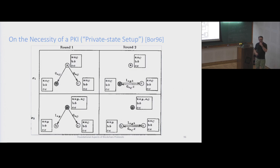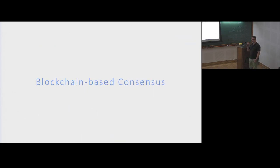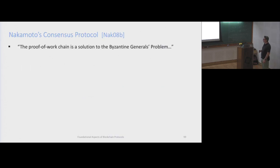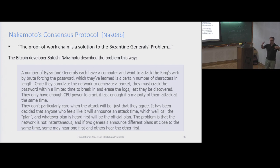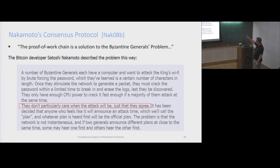A brief recap of what we know about consensus and broadcast. Now let's look at what new stuff happened with the blockchain. Remember what Nakamoto said early on - that you can use the chain, the proof-of-work chain, to solve this consensus problem. He had this story about trying to hack a Wi-Fi network where all parties have to start hacking at the same time to be successful.